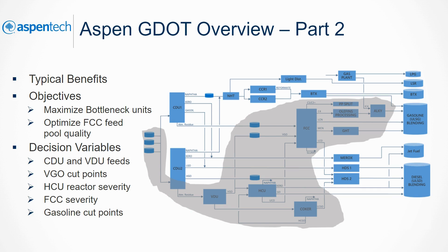GDOT reaches these objectives by controlling the CDU and VDU feeds, VGO cut points, HCU reactor severity, FCC reactor severity, and the gasoline cut points. A benefit of this application is a significant increase in conversion and volume gain.